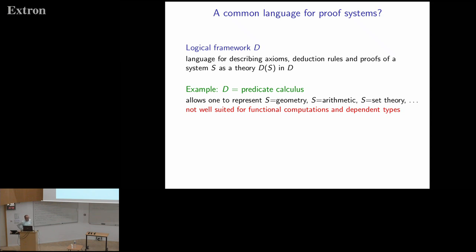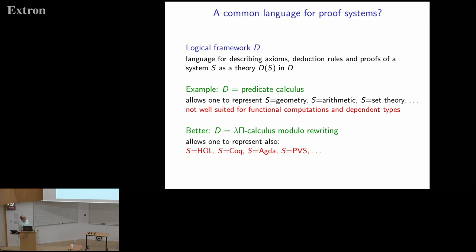Such a common language for proof systems is what we call a logical framework — a language for describing axioms, deduction rules, and proofs of a system as a theory. A very well-known example is predicate calculus itself, which lets you formalize geometry, arithmetic, set theory, and more, but it's not well suited to handle functional computations or dependent types. In this school, we consider a more recent logical framework: the lambda pi calculus modulo rewriting, which I'll give more details about later.